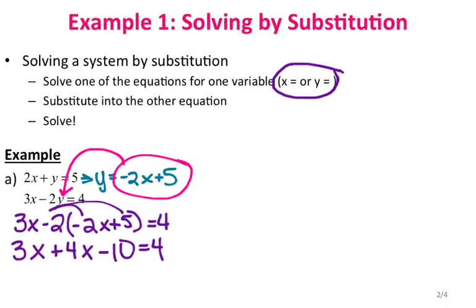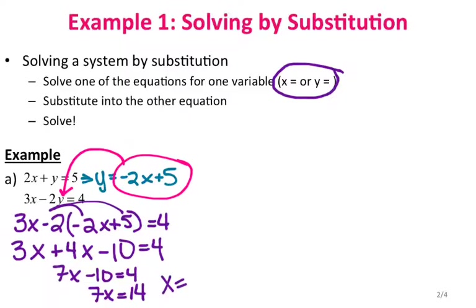Combining like terms gives me 7x minus 10 equals 4, then 7x equals 14 after adding 10 to both sides. Dividing by 7 gives x equals 2.